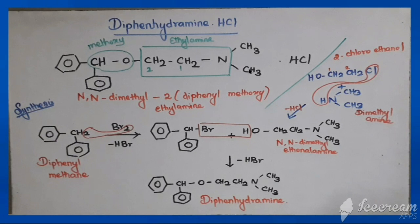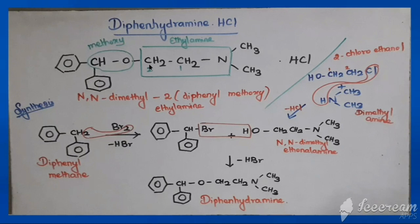The nitrogen of ethylamine is attached with two methyl groups. For the chemical name: the parent is ethylamine; the second carbon of ethylamine carries a diphenylmethoxy group; and the nitrogen has two methyl groups, making it N,N-dimethyl. So the chemical name is 2-(diphenylmethoxy)-N,N-dimethylethylamine — that is the chemical name of diphenhydramine.